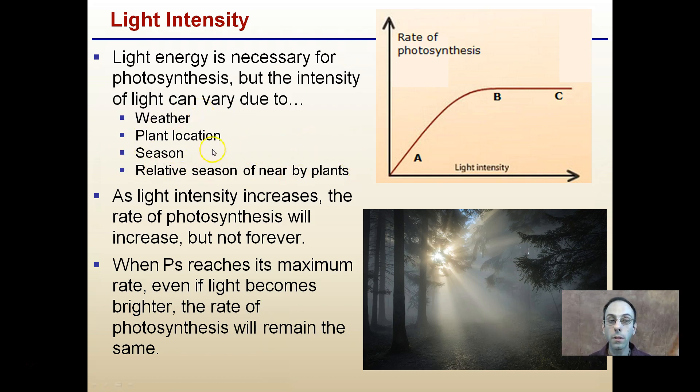Relative season of nearby plants. What this means is if you're a plant living under a deciduous tree, they drop their leaves in the fall, meaning in the winter and early spring that plant will receive a greater intensity. Looking at our light intensity to photosynthetic rate graph, you'll notice as light intensity increases from A to B, the rate of photosynthesis will also increase.